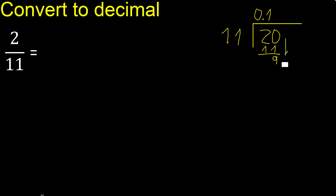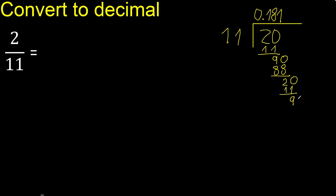Next, there is no number, therefore complete — always complete with 0. So 90. 11 multiplied by 9 is greater; multiplied by 8 is 88. Subtract: 90 minus 88 is 2. Always complete with 0. So 20. 11 multiplied by 1 is 11.